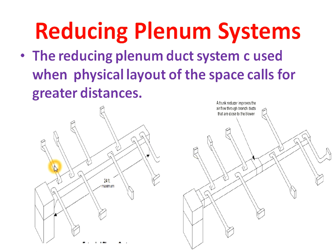If we increase the main duct length beyond 24 feet, there will be less pressure in the branch ducts closest to the AHU, and there will be high pressure in the branch ducts at the far end of the main duct. To avoid this drawback, we use the reducing plenum system.